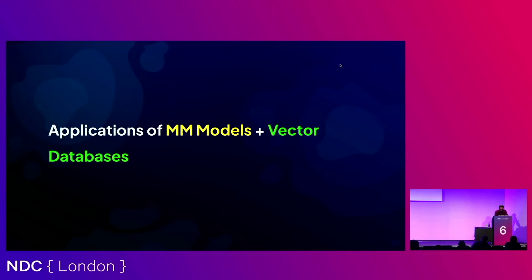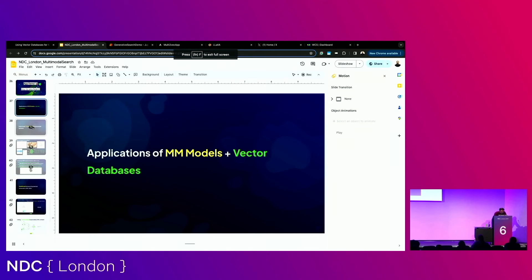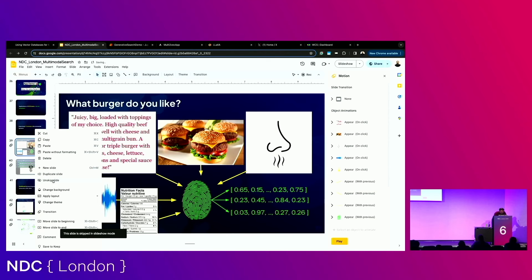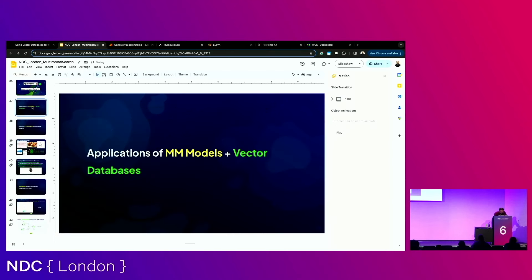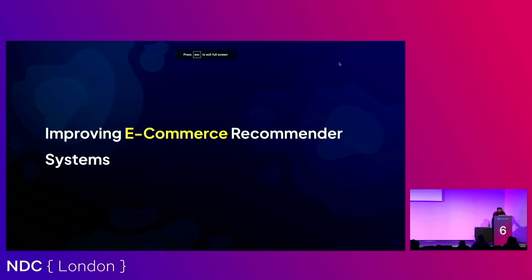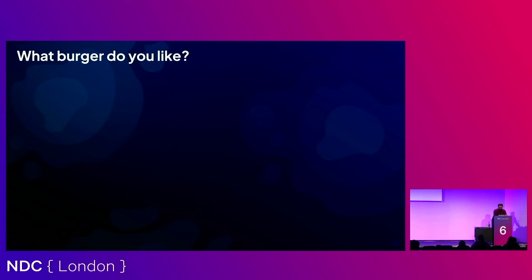What I want to talk about now are some applications of multimodal models and vector databases together. There are two applications I think are the most pressing, with work already going on in both. The first is multimodal recommender systems — e-commerce recommender systems — a field I think will get revolutionized as a result of having models that understand different types of media. If I ask you what type of burger you like, currently how things work is you describe it to me, I encode your preferences using text, and I return other burgers described the same way.